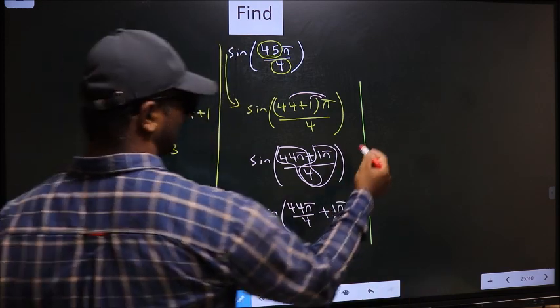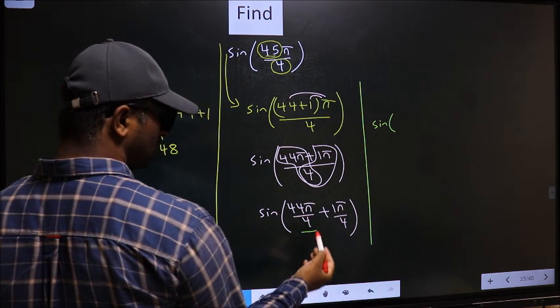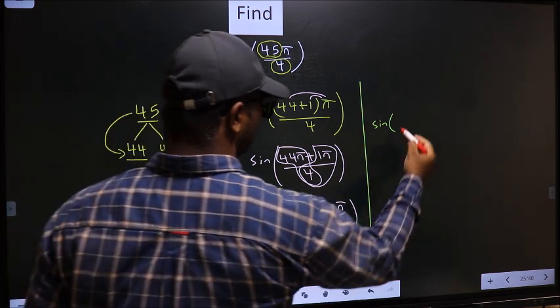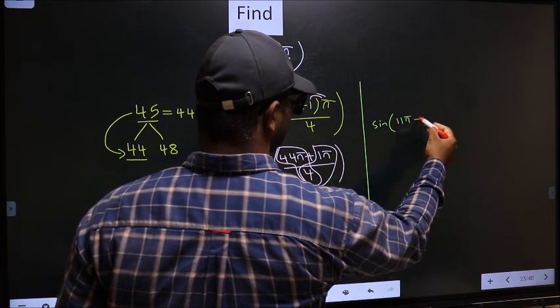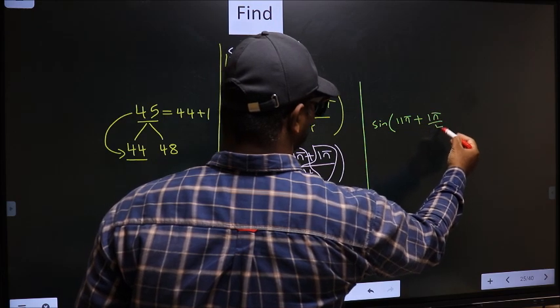Next, sin. Now, here you should cancel. 4 ones, 4 elevens. So, we get 11π plus this angle no change: 1π/4.